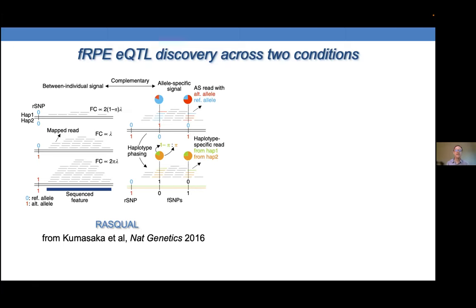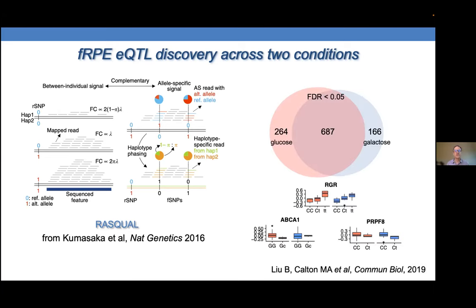We identified over a thousand high-confidence eQTLs, most of which were shared between the two metabolic conditions, but some of which were condition-specific. Our collaborators undertook a rigorous approach to decide whether these were truly condition-specific. It's interesting to think about what's going on with condition-specific eQTLs — many causative variants fall in regulatory sequences, suggesting transcription factors acting through these variants that are only engaged under the galactose condition.